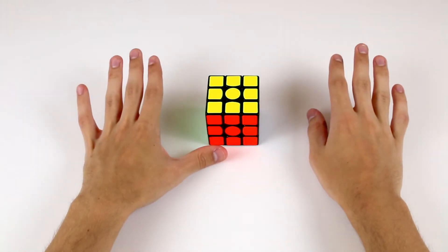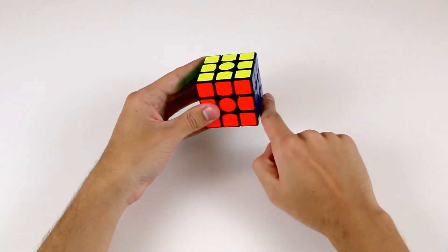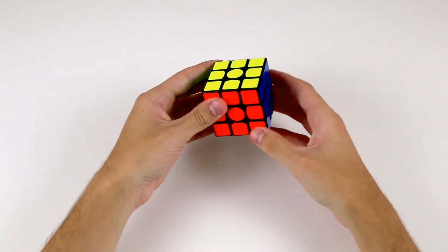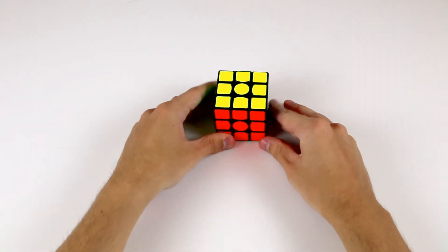We're not going to think about the Rubik's Cube in terms of sides, but rather in terms of layers. That is, there are three layers on the Rubik's Cube: the bottom layer, the middle layer, and the top layer, and we're going to solve each of those one at a time.